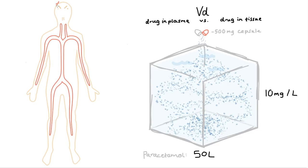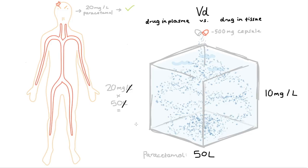Say you've got a nasty headache. We reckon a paracetamol plasma concentration of 20 milligrams per litre will do the trick. We multiply the plasma concentration that we want by the volume of distribution to find out what dose we should give. So 20 milligrams per litre times 50 litres — cancel out the common unit — and you end up with 1,000 milligrams, or 2 average tablets of paracetamol.